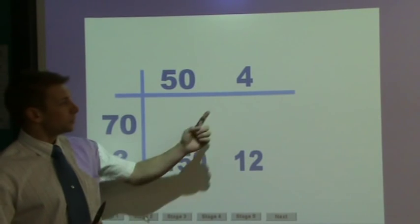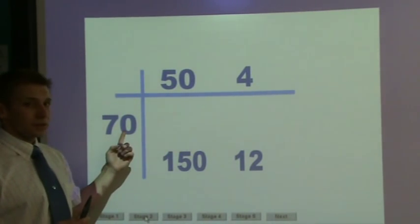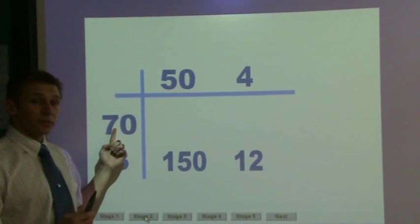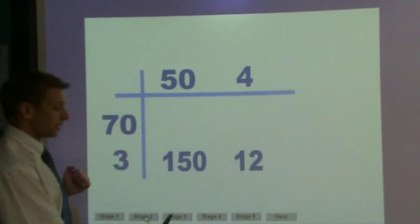My next step would be to take the 4 multiplied by the 70. Again I would do 4 times 7, giving me 28, and make that 10 times bigger.